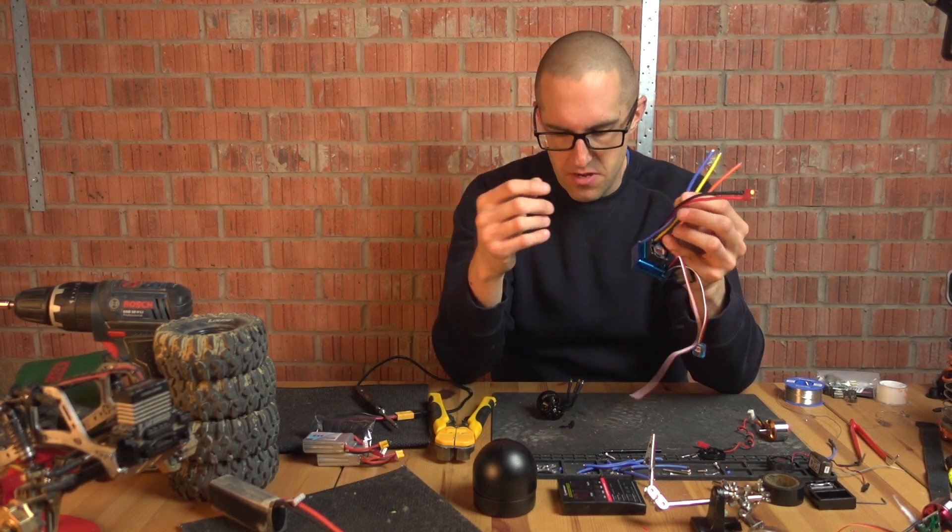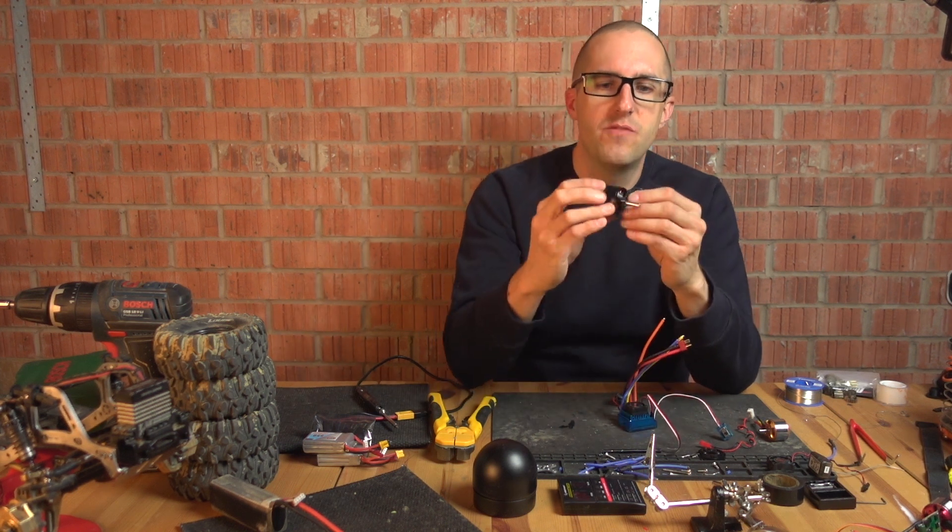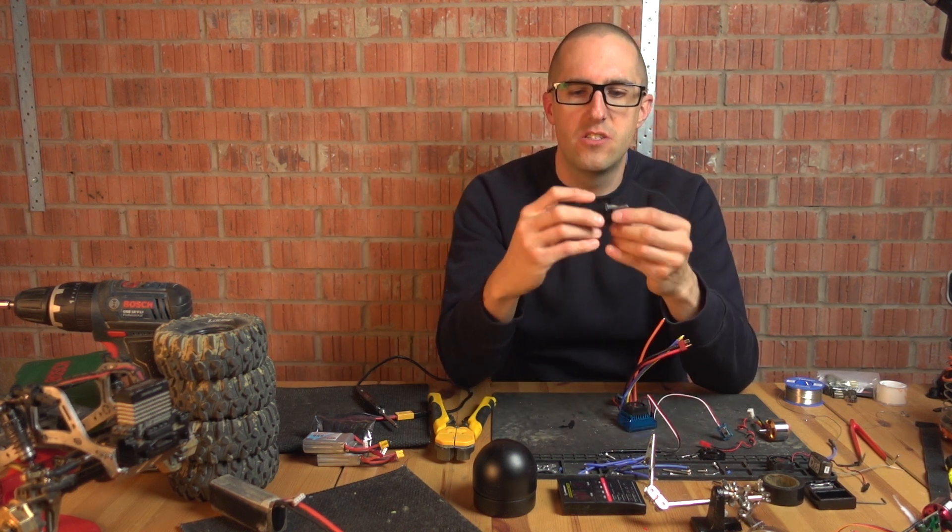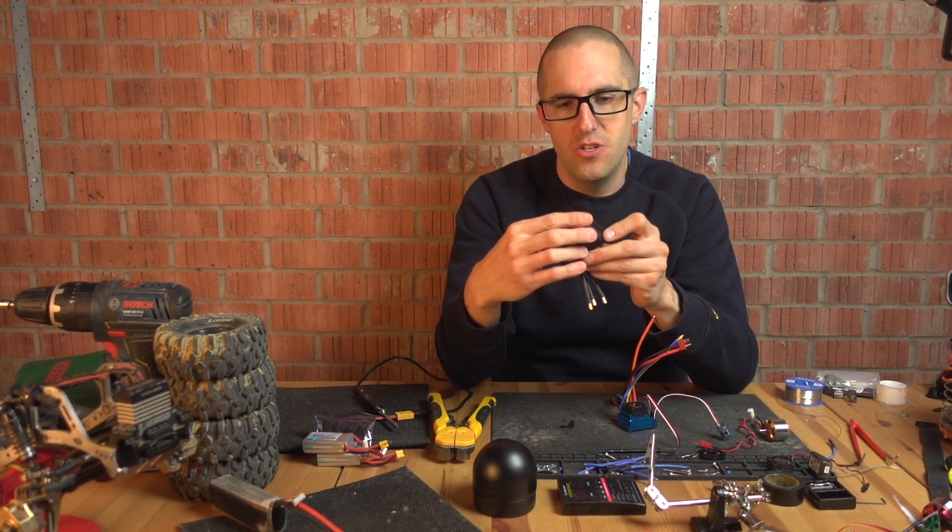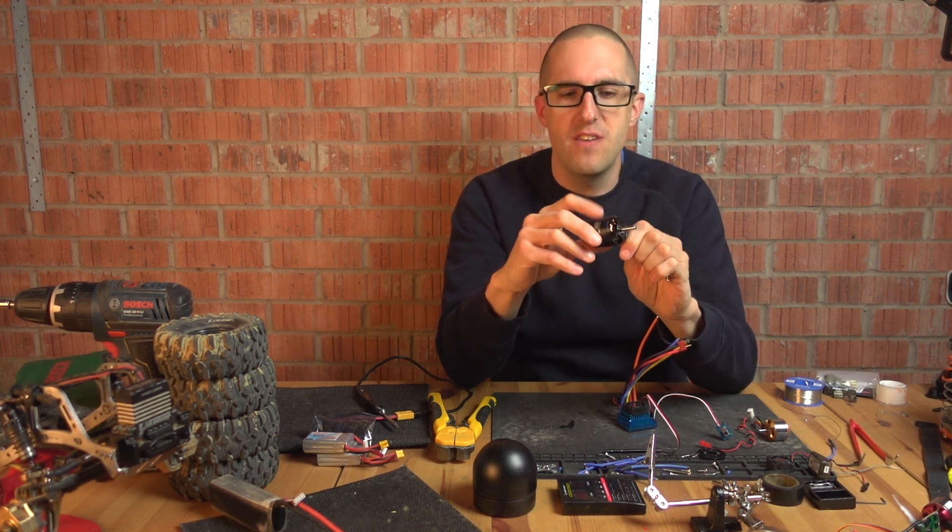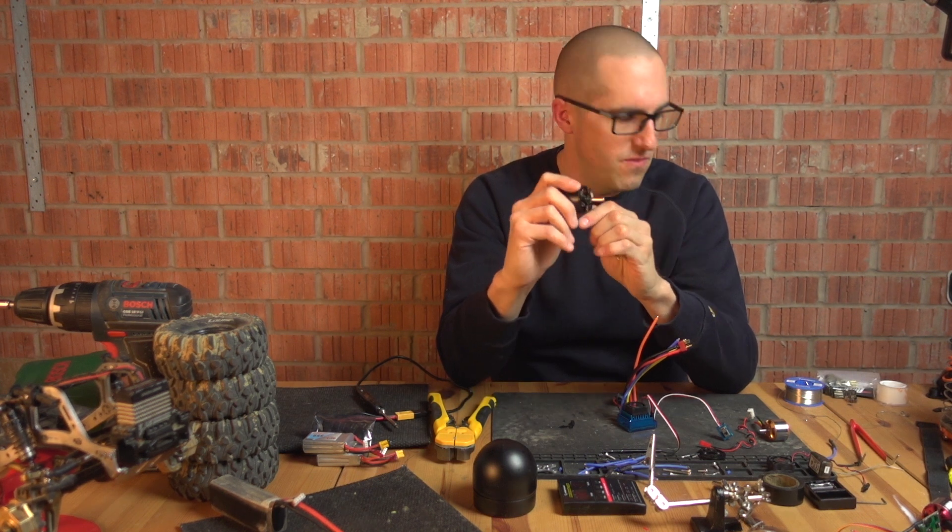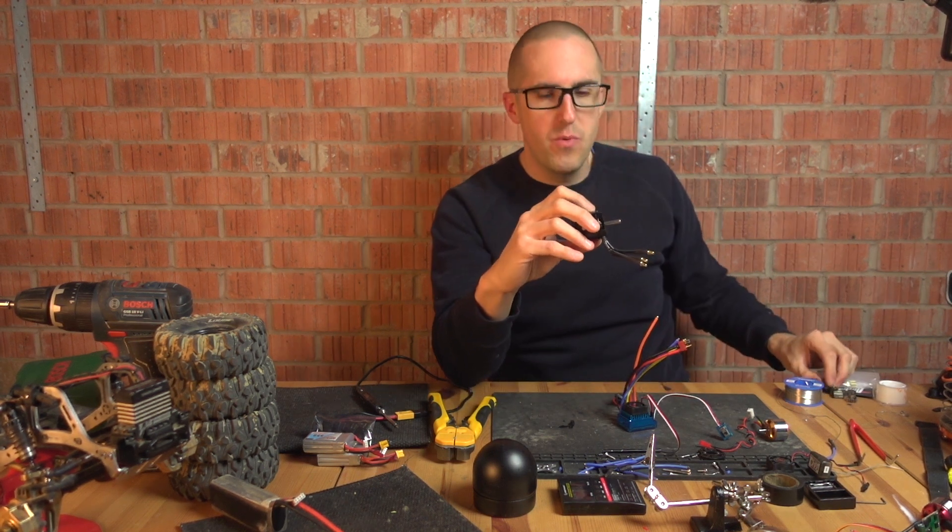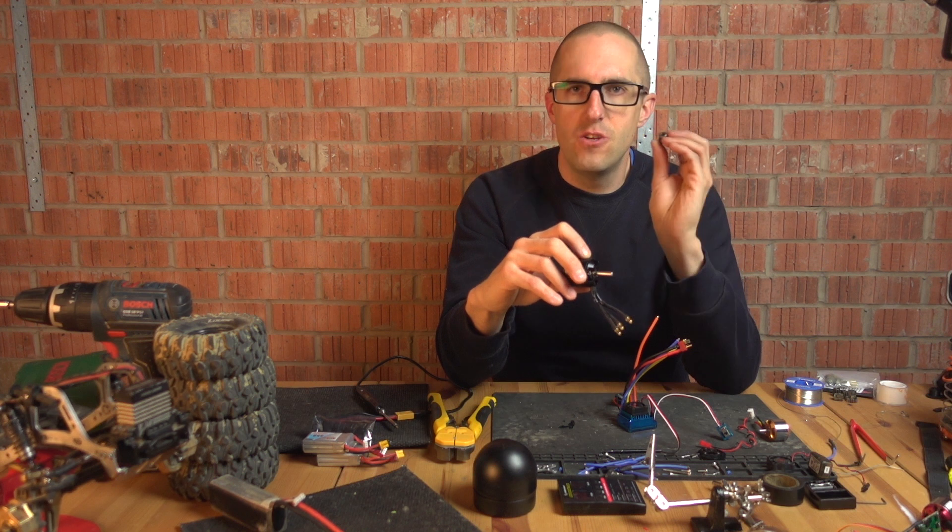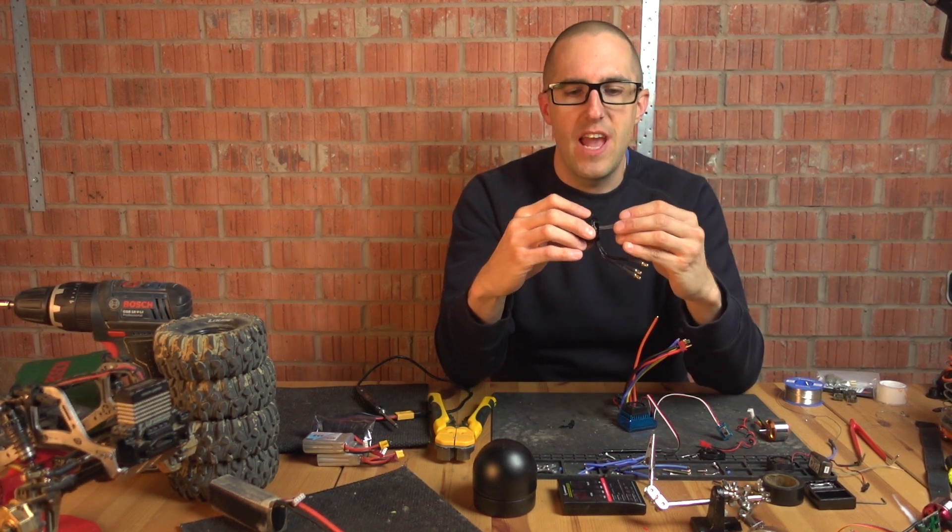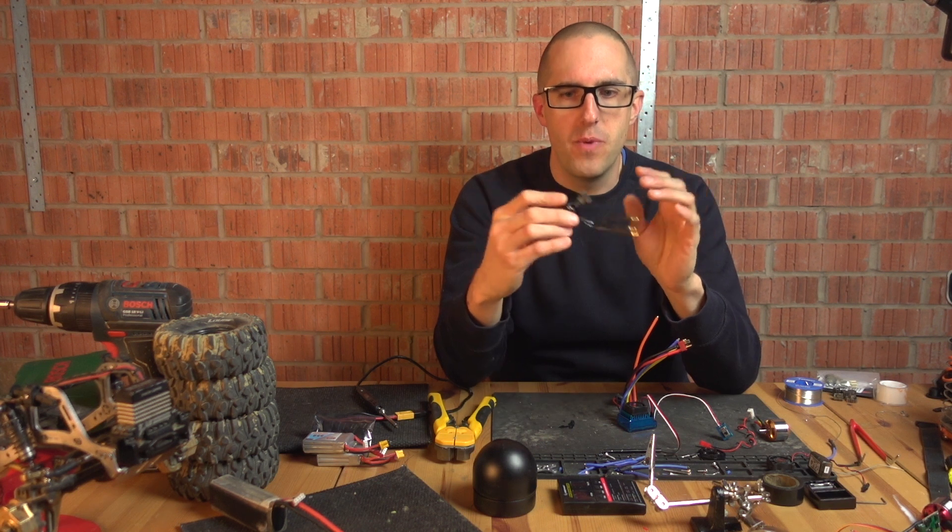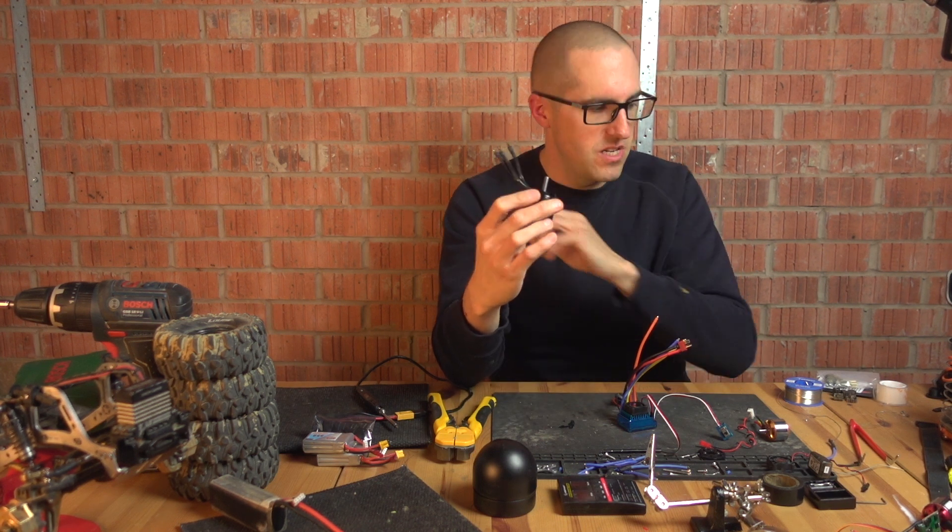It doesn't really matter because we're going sensorless and the motor that I've chosen is a Surpass Hobbies C3542 and it's a 1450 kV. I couldn't get it in a faster kV so I'm going to have to probably run a 17 tooth pinion and I might even need to swap my spur to get the wheel speed back, although I'm hoping the extra timing should speed it up.